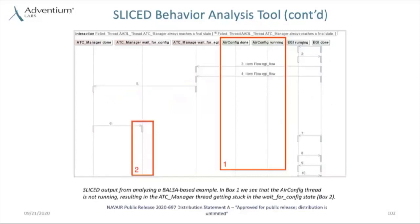What we're looking at here is a SysML state diagram. For those familiar with BALSA, you may recognize the UOPs called out at the top of the screen — we have several states for each UOP. Starting from the upper left-hand corner, we have the Air Traffic Controller Manager, which can be in a done state, a wait-for-configuration state, or a wait-for-EGI state. This is a slight variation on the typical use of a SysML state diagram. What it lets us do is render a counterexample to a correctness assertion about a system for the user to see.